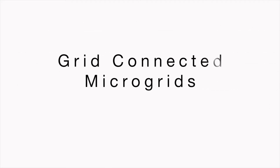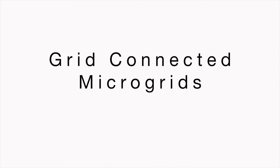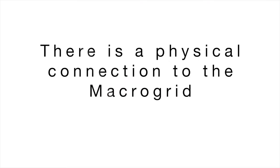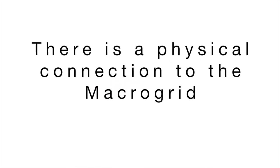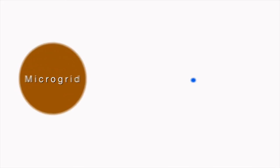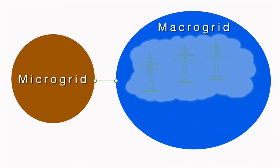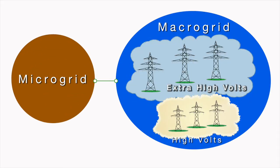Grid-connected microgrids are the second type of microgrid system, where there is the ability to switch to the macrogrid either to take energy from or input to, when the microgrid is connected to both the extra high voltage and high voltage sections of the macrogrid.